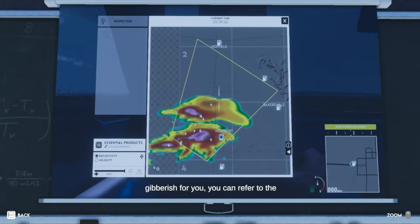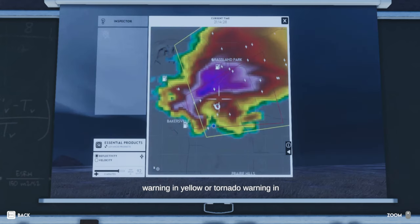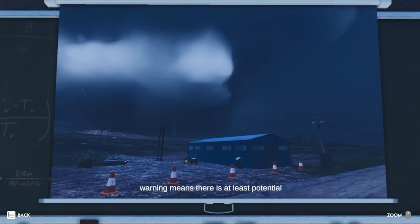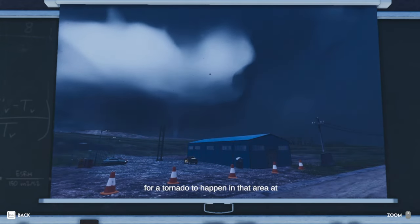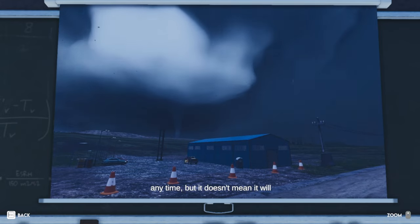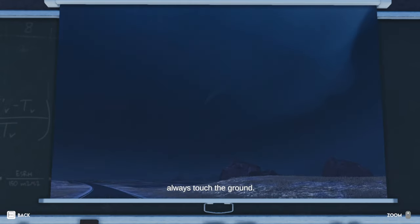If that's all gibberish for you, you can refer to the polygons on the map. They represent areas that are under a severe thunderstorm warning, in yellow, or tornado warning, in red. A tornado warning means there is at least potential for a tornado to happen in that area at any time, but it doesn't mean it will always touch the ground.